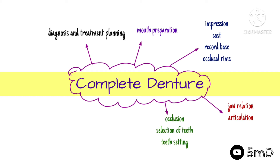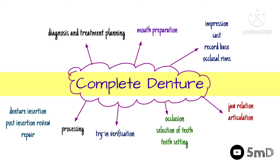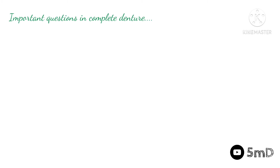Then we move to teeth setting. Before that we need to know occlusion concepts — what is balanced occlusion and such things — and also the selection of artificial teeth, which we will arrange using teeth arrangement principles. After arranging, we do a mock-up trial, set-up trial, or try-in before processing and fabrication. Then after processing we have denture insertion steps, followed by post-insertion review and repair works. The topics in complete denture follow the protocol of fabrication steps.